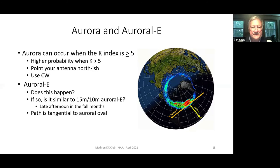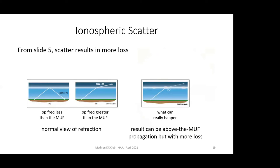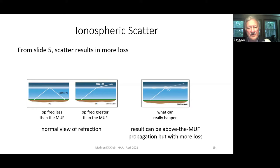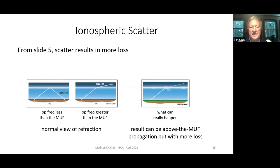Ionospheric scatter - slide 5 said that scatter results in more loss. Our normal view of refraction: when the operating frequency is less than the MUF, the wave is refracted back to earth. When the operating frequency is greater than the MUF, we tend to think the wave goes into space and there's no contact. But what can really happen - and it's been observed and it's even in VOACAP predictions - is that there can be some scatter even though the MUF is not high enough. It's called an above-the-MUF mode. Of course it has more loss, though.